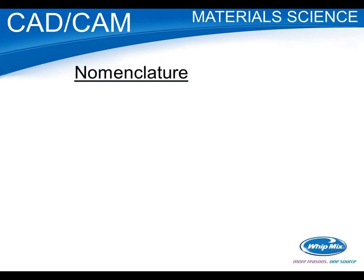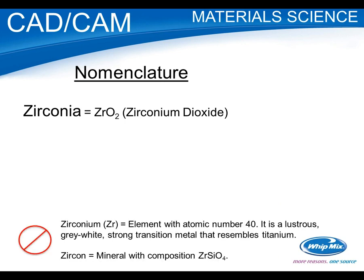Let's start with nomenclature. It's amazing how many people say it wrong, including myself. What we're talking about is zirconia — it's an oxide of zirconium, which is an element, atomic number 40, a metal, kind of like titanium. So zirconium is a metal that's been oxidized to form zirconia. When you hear somebody say 'we have a zirconium machine,' they probably don't — I don't know of anybody milling pure zirconium.